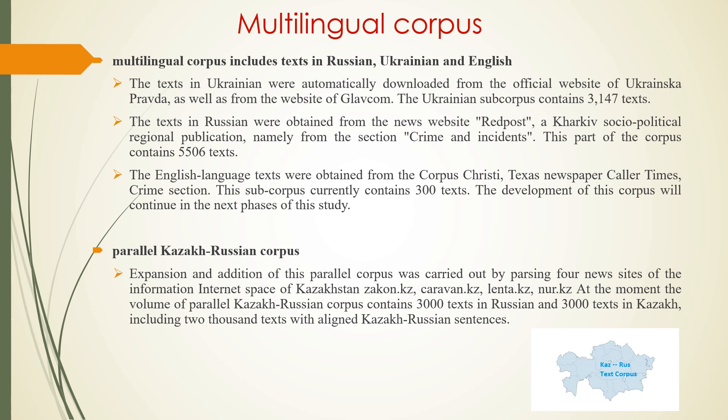The texts in Russian were obtained from the news website Red Post, a Kharkiv sociopolitical regional publication, from the section Crime and Incident. This part of the corpus contains 5,506 texts. The second multilingual corpus, used as a base for ontology generation, is the parallel Kazakh-Russian corpus, which has been developing for more than three years.